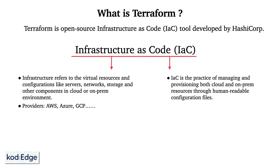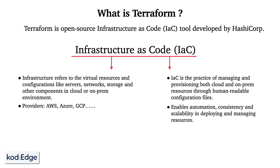What is infrastructure as code? Infrastructure as code is a practice of managing and provisioning both cloud and on-premise resources through human-readable configuration files. This enables automation, consistency, and scalability in deploying and managing resources.